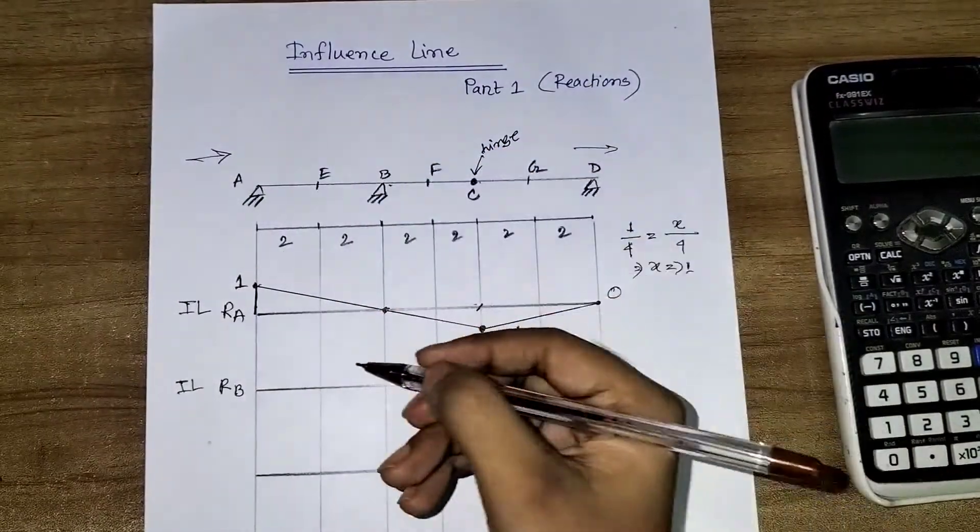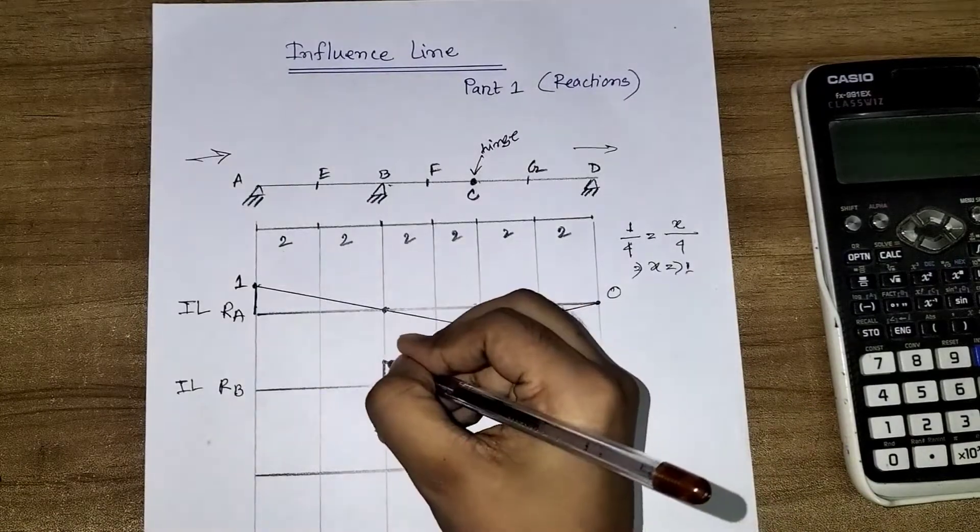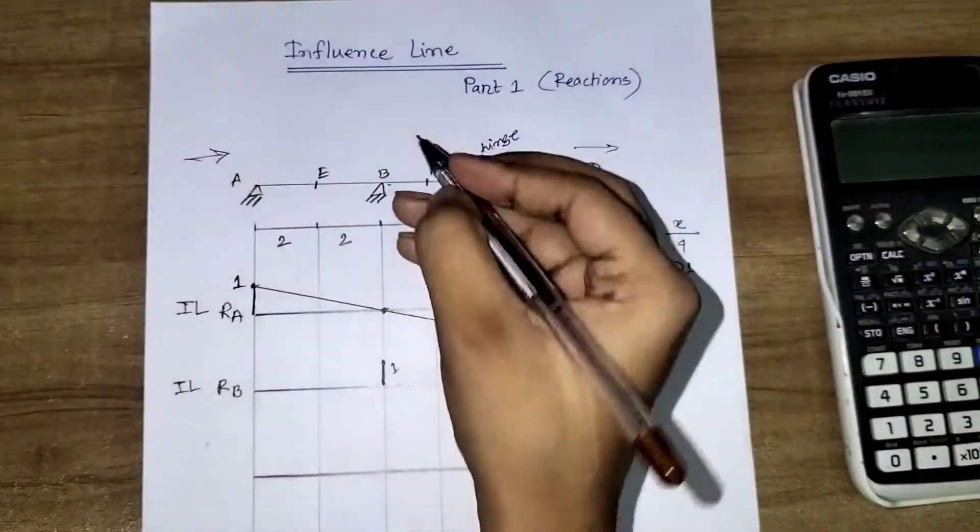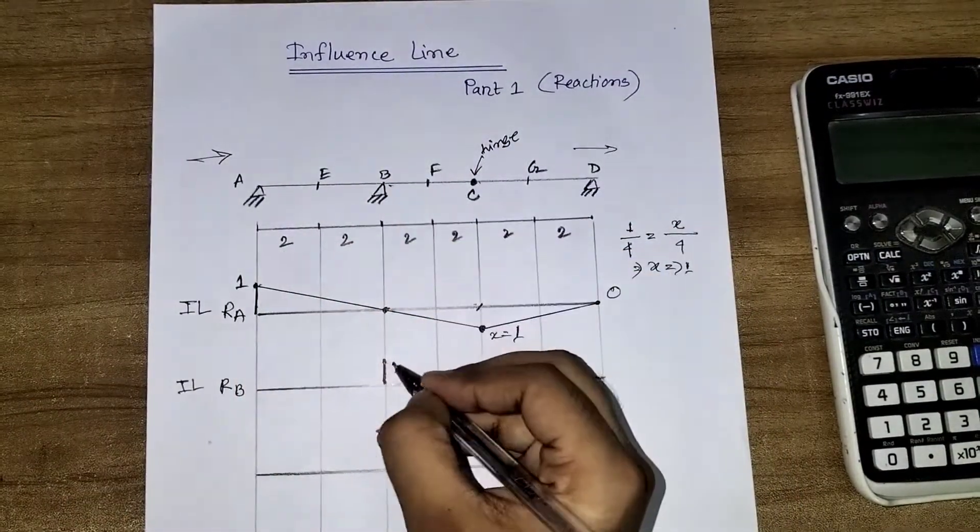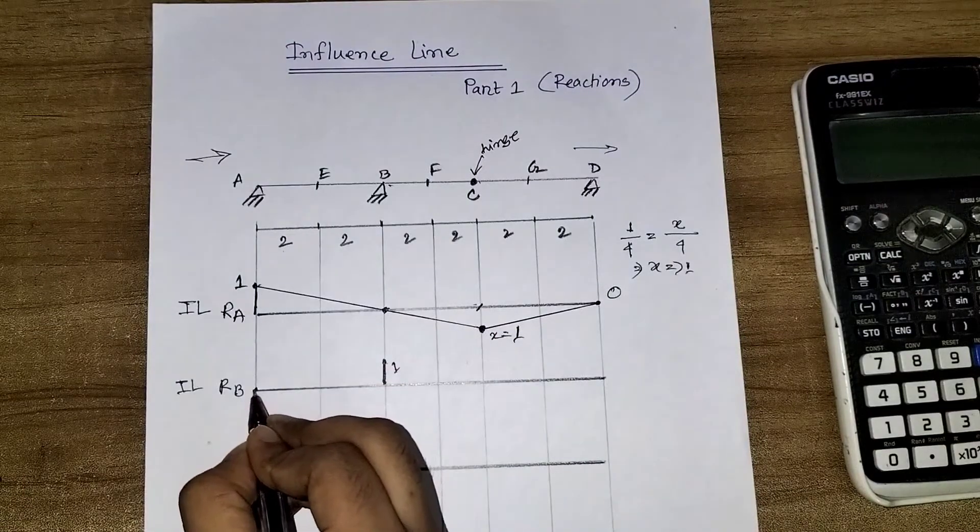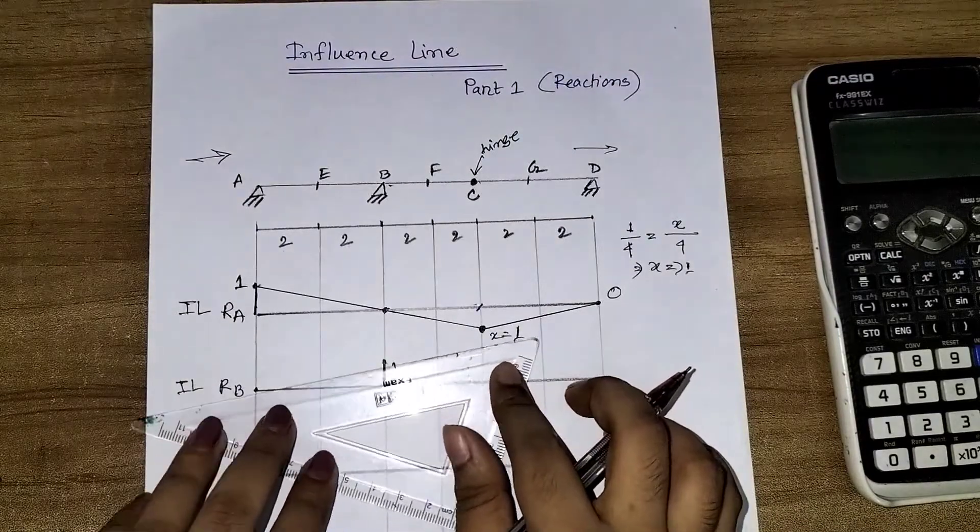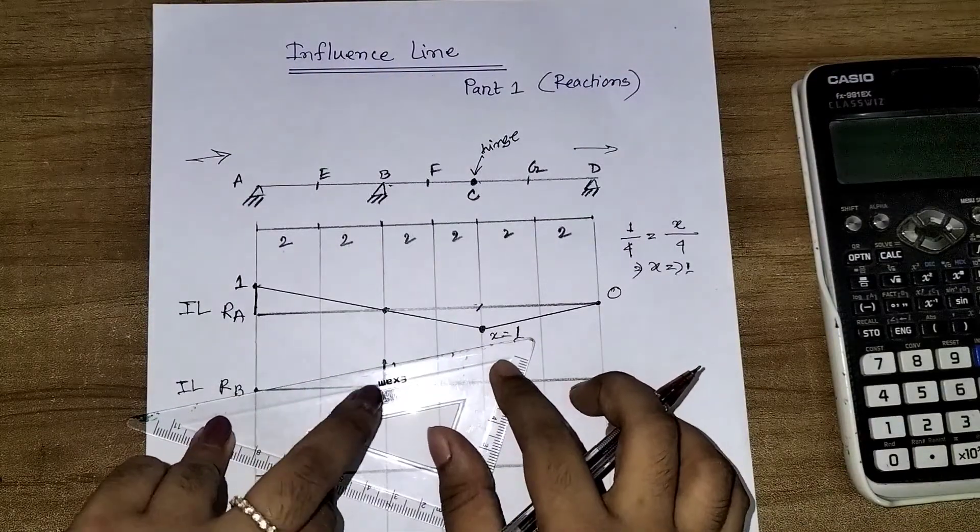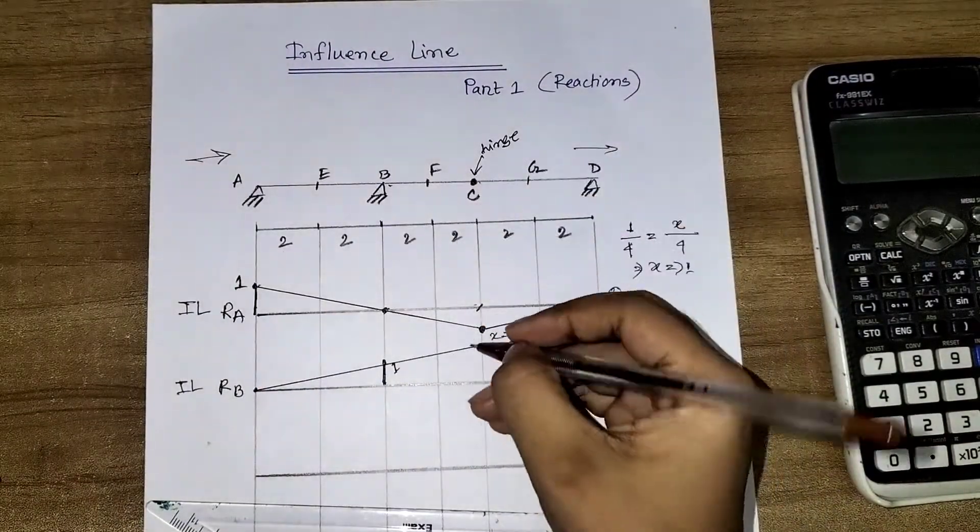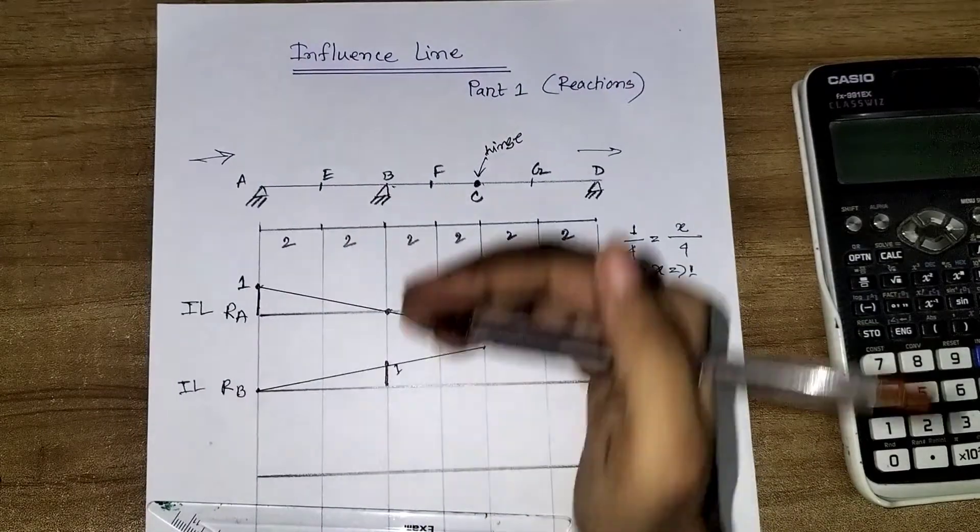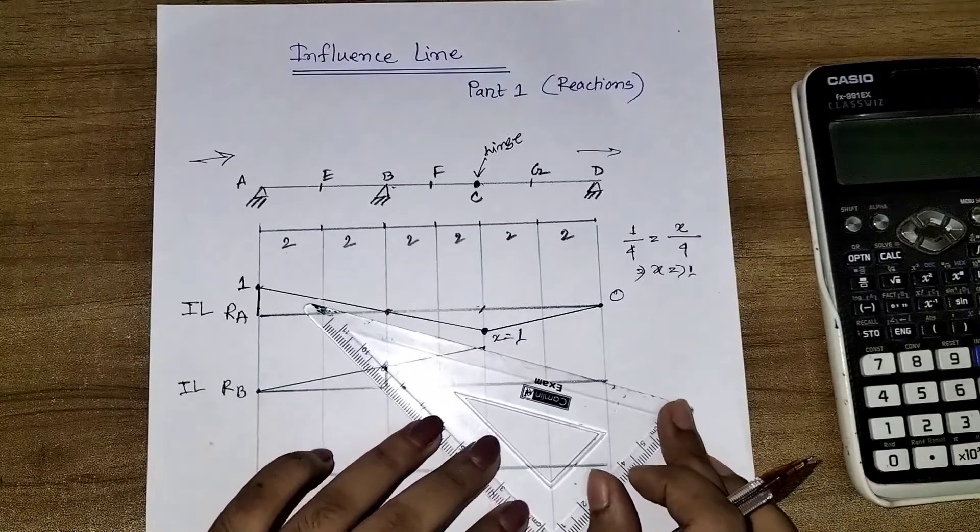If this is clear, then I will proceed to the next one. Here, IL of RB. The hinge will move upward on the other side.